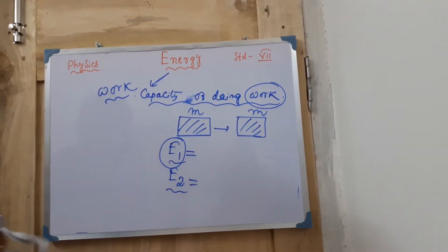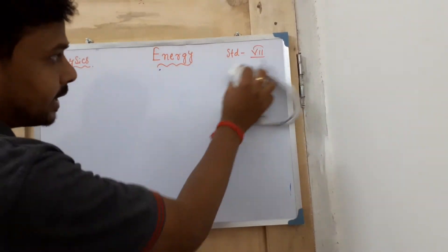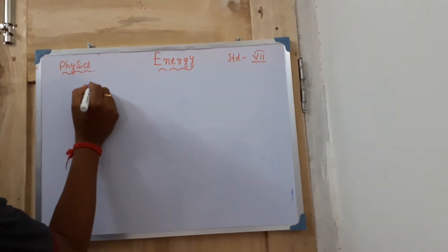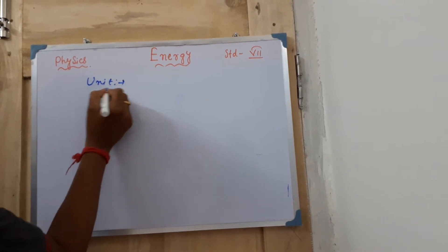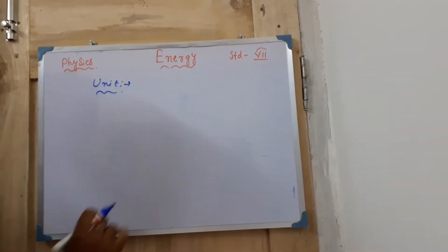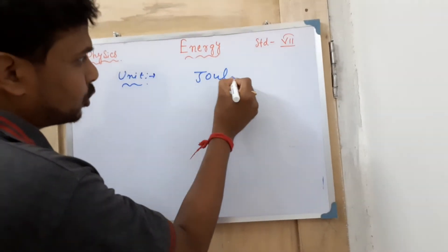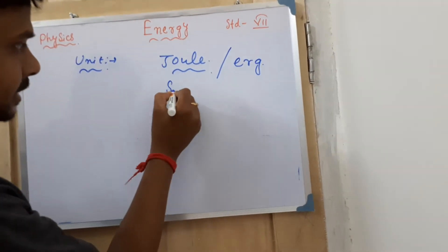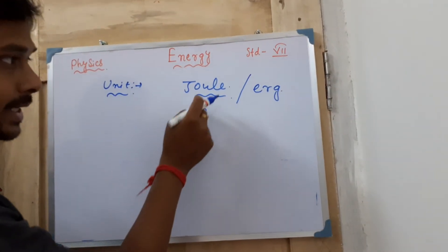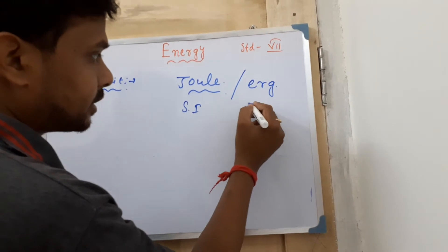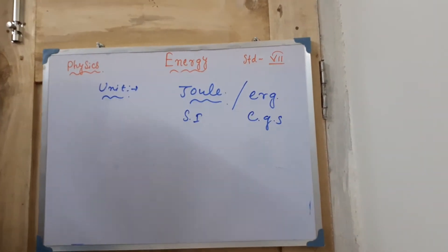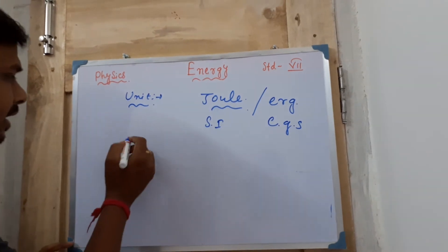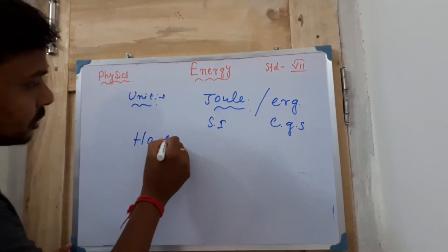Next, while talking about units and inter-conversion, that part is also present in your chapter. Energy and work have very similar units. The most familiar unit is the joule — that is one unit of energy in the SI system. You can also write erg, which is the unit of energy in the CGS system. You have already learned about CGS and SI systems in class 6 standard.